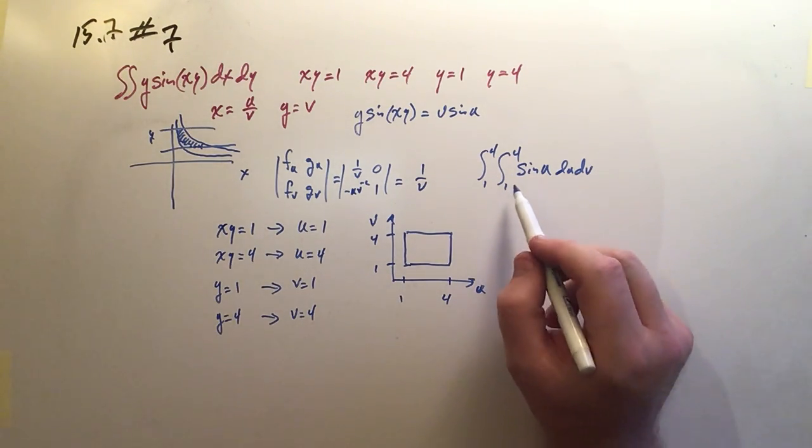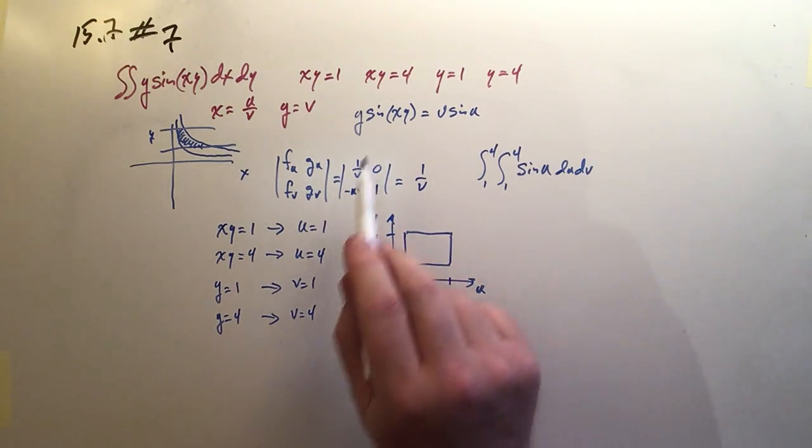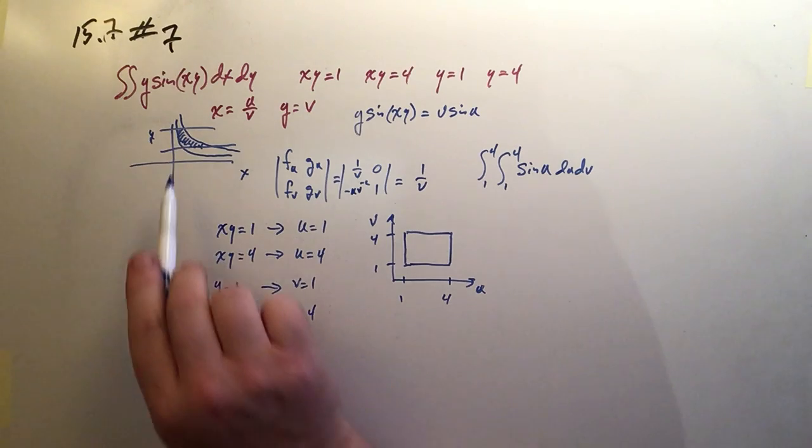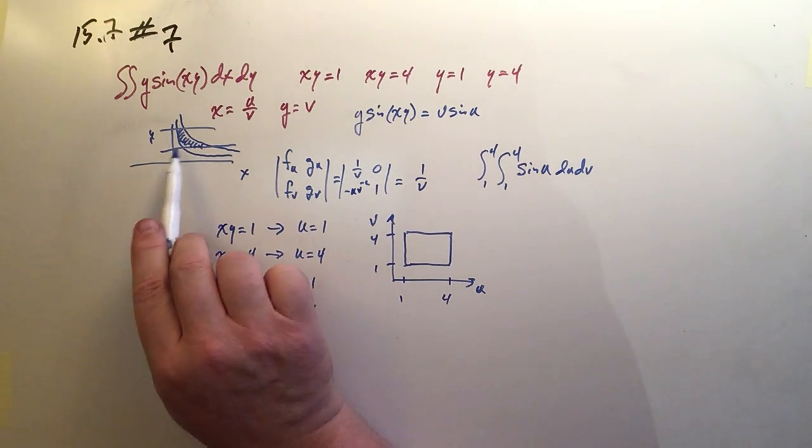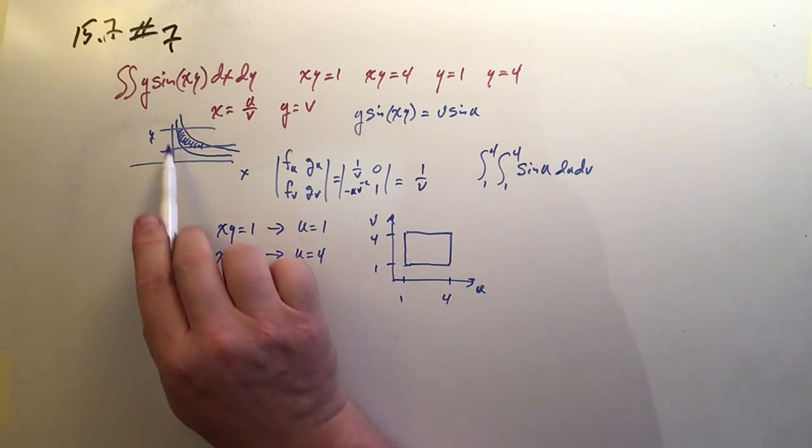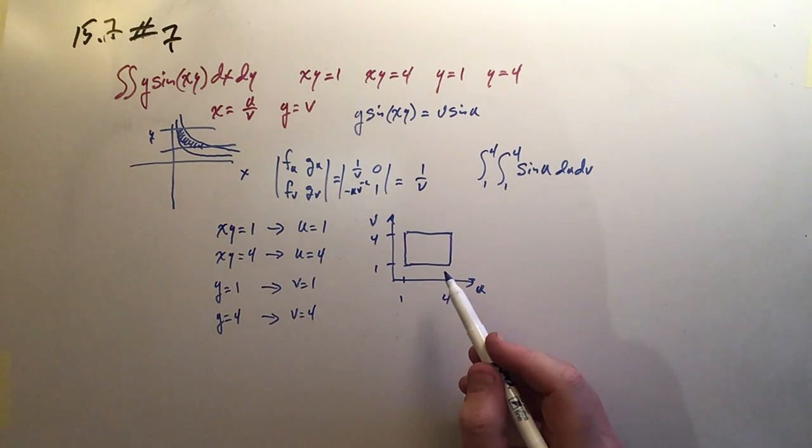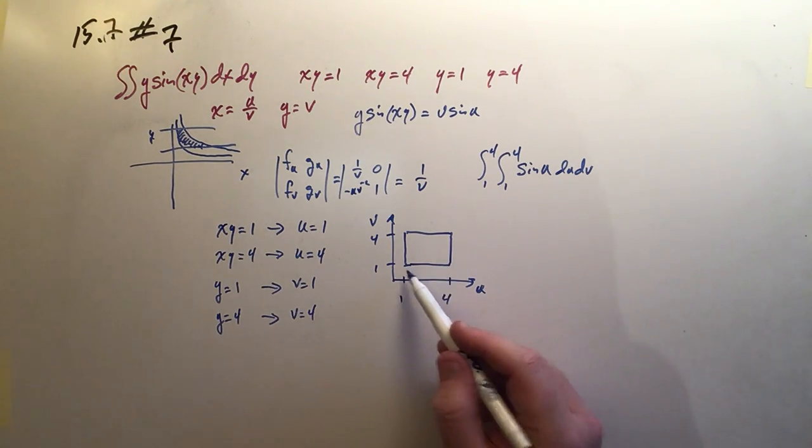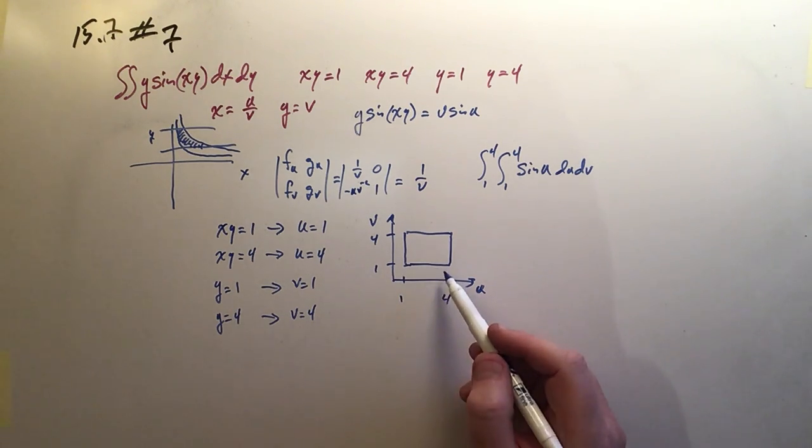So you can see the power of this ability to transform into a new set of variables. It maps what can be a very difficult area or a very difficult capping function. And ideally, it turns it into a rectangle so that we're doing the simplest possible multidimensional integration that we possibly could.